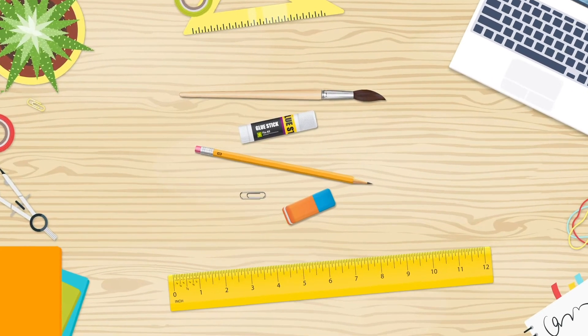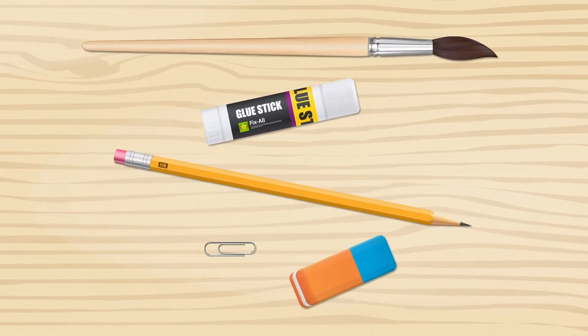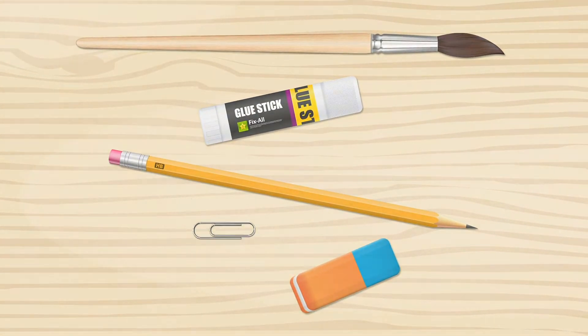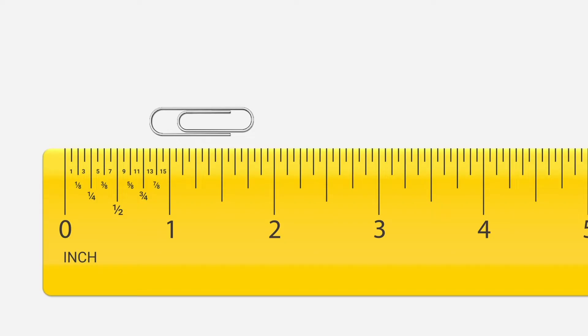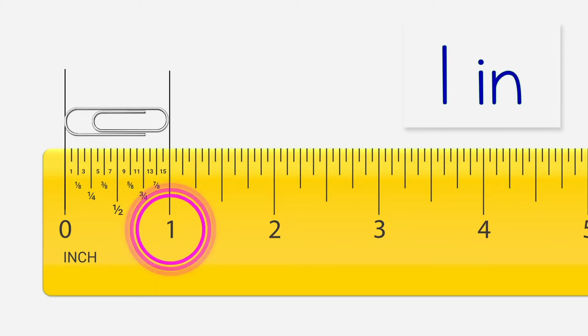Use a ruler to measure the length of each object in inches. Let's measure the length of the paperclip. Align one end of the paperclip to the zero mark on the ruler. The paperclip is one inch long.